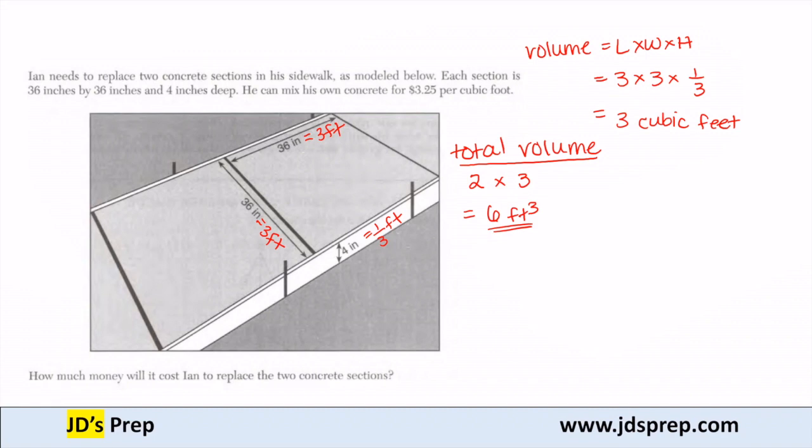Now that we know how much concrete we need, let's figure out the total cost. The total volume is 6 cubic feet, and it costs $3.25 per cubic foot. When I multiply those two numbers together, I get a total cost of $19.50.